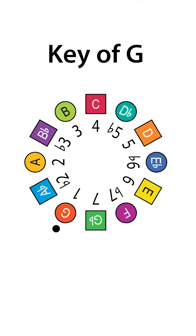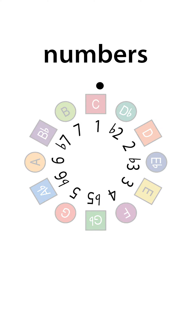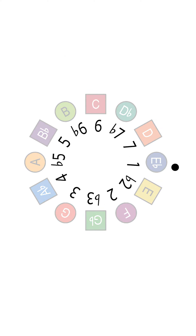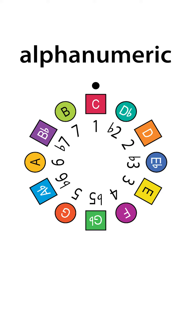But in the key of G, for example, these same numbers are realigned with the notes to highlight the intervals in this key, where now G is 1, Ab is b2, A is 2, etc. And we can see the same intervals in any of the other keys just by rotating the numbers to align with the notes in those keys. So the letters are fixed while the numbers are variable, and this is basically how this alphanumeric system of music labels works.